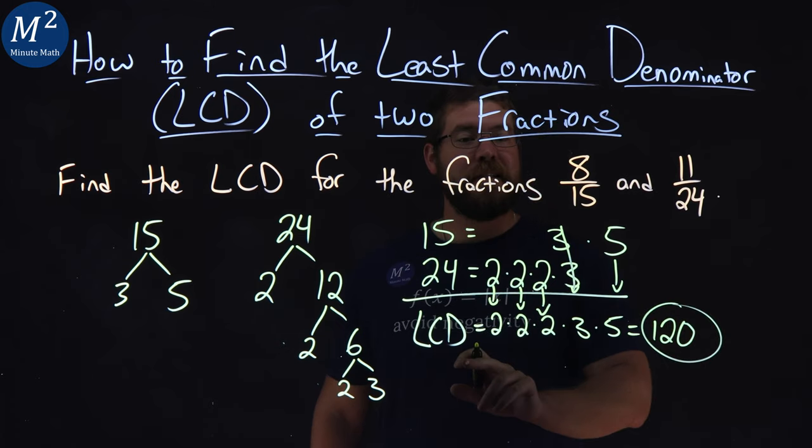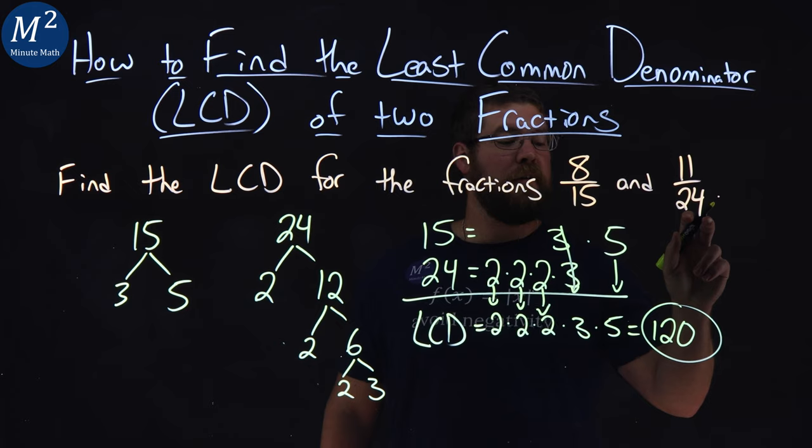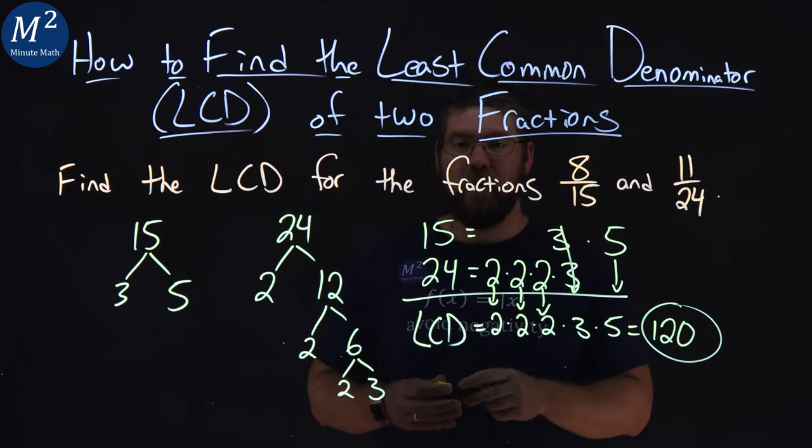And so, the LCD, Least Common Denominator, of eight fifteenths and eleven twenty-fourths is one hundred and twenty.